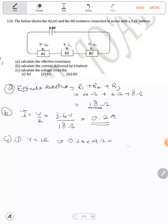So voltage equals current 0.2 amperes times resistance 4. So 0.2 × 4 gives us 0.8 volts.